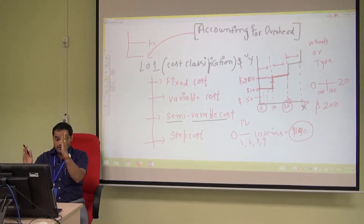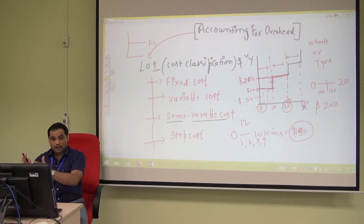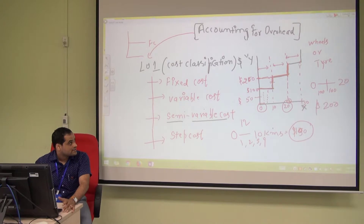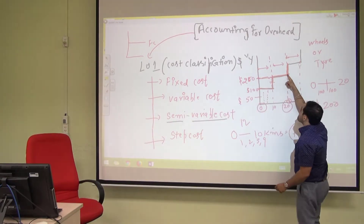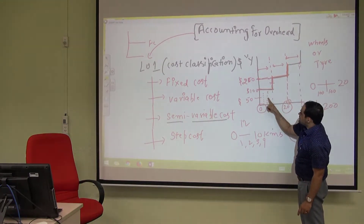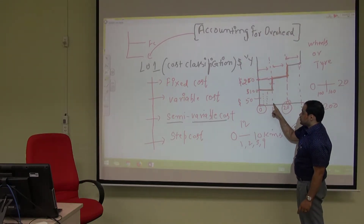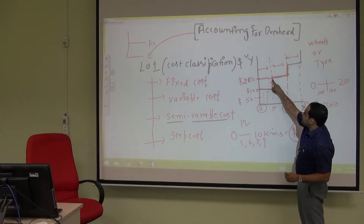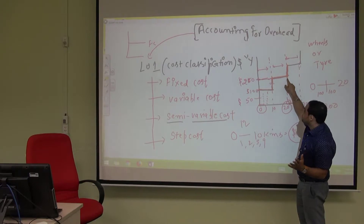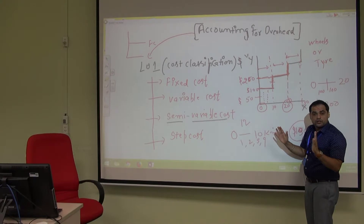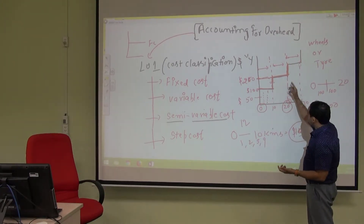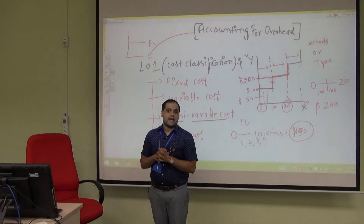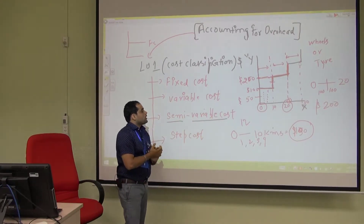Within the range of 10 to 20 kilometers — whether you run 11, 12, 19, or 20 kilometers — your cost is fixed. But if you cross that limit, cost increases again. So you run within a limit, cost is fixed; cross the limit, cost increases, giving you another fixed range. That is why the graph of step cost looks like steps.